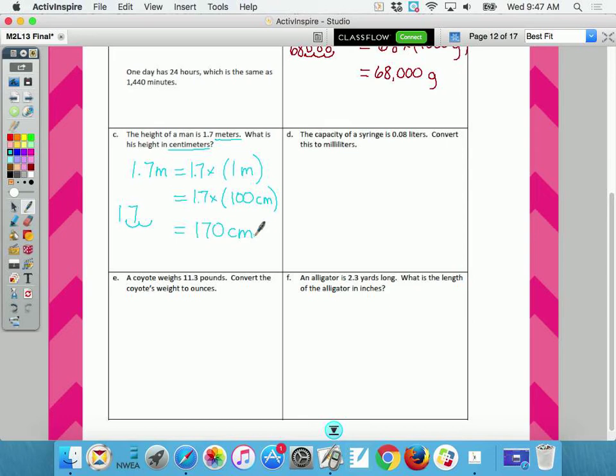The capacity of a syringe. Now, they're trying to get you to stop right there and say you don't know how to do it because of capacity and syringe. Don't let those words mess you up. That's not what the problem's about. It says the capacity is eight hundredth liters. Convert this to milliliters. So what are my two words? Liters and milliliters.